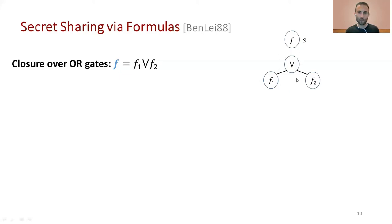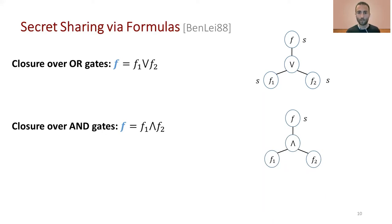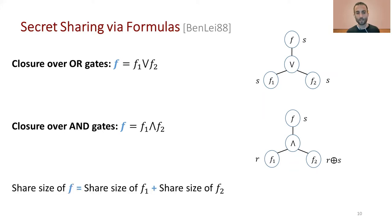For OR gates: if we want to share secret S according to f = f1 OR f2, we simply share it twice — once according to f1 and once according to f2. Then any coalition authorized by either f1 or f2 can recover the secret. For AND gates: we share a random secret r according to f1, and the secret r XOR S according to f2. Only if a coalition is authorized by both f1 and f2 can it recover S. In both cases the total share size of f equals the share size of f1 plus the share size of f2.